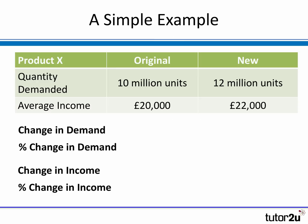Let's look at a simple example. Let's imagine a product — Product X — where incomes in the economy are £20,000 on average, and we find that 10 million units of Product X are demanded by the market. That's our starting point. Now let's see what happens to demand for Product X as incomes rise. In this case, we see that incomes have risen from £20,000 to £22,000, and there has been an increase in the demand for Product X from 10 million to 12 million units.